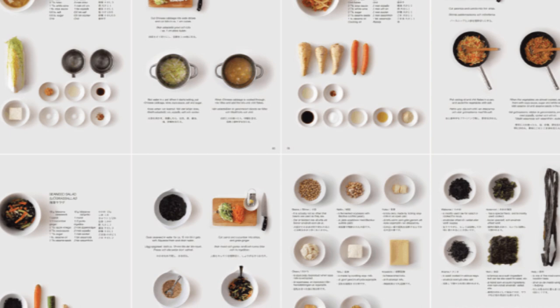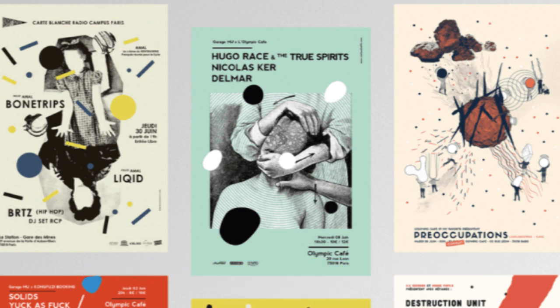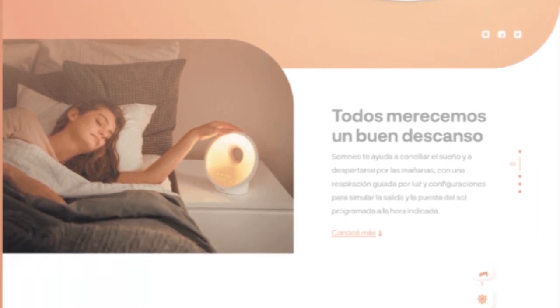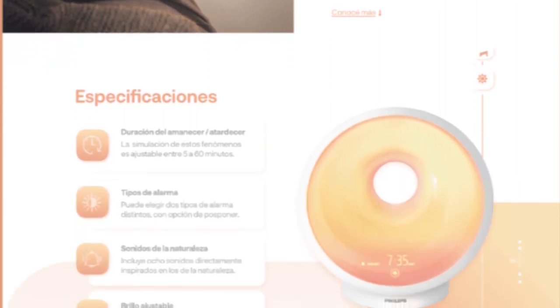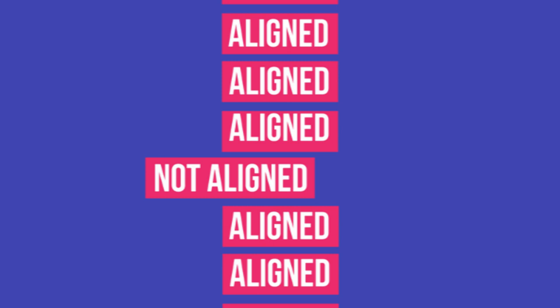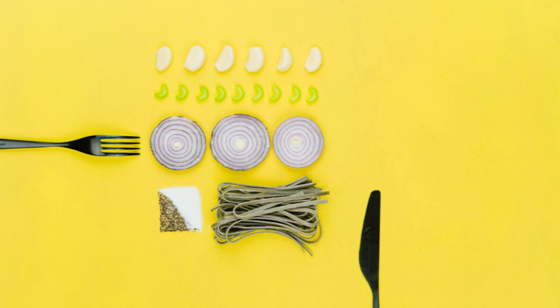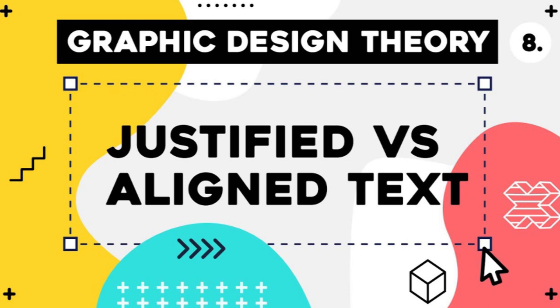For example, look at the poster below — the designer wanted to create some movement, but almost nothing is aligned, and as a result the viewer gets dizzy from the dancing lines. Alignment is very important as it guides the eye and improves the scannability of content. The text divided into aligned columns organizes the content neatly. Alignment also creates a connection between the different parts of your design and a sense of unity.